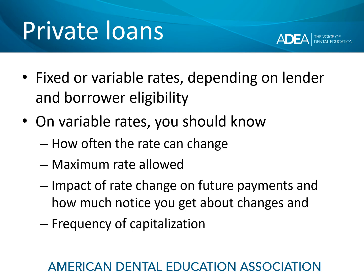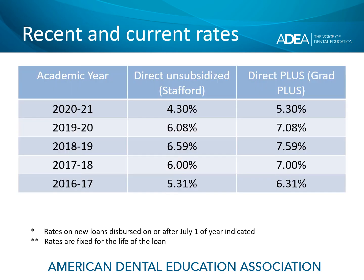This is a chart of the recent and current rates on the direct unsubsidized and direct plus loans. You'll notice that the rate for the current academic year beginning July 1, 2020, all the way through June 30, 2021, these rates are remarkably low — 4.3% for direct unsubsidized and 5.3% for direct plus.